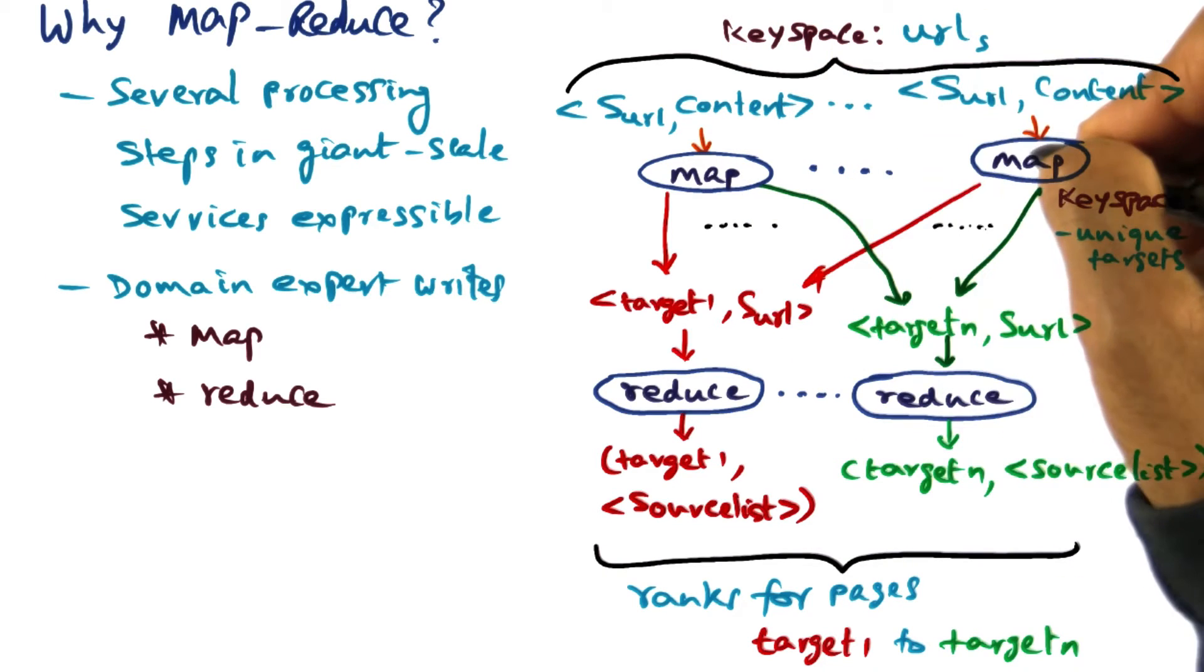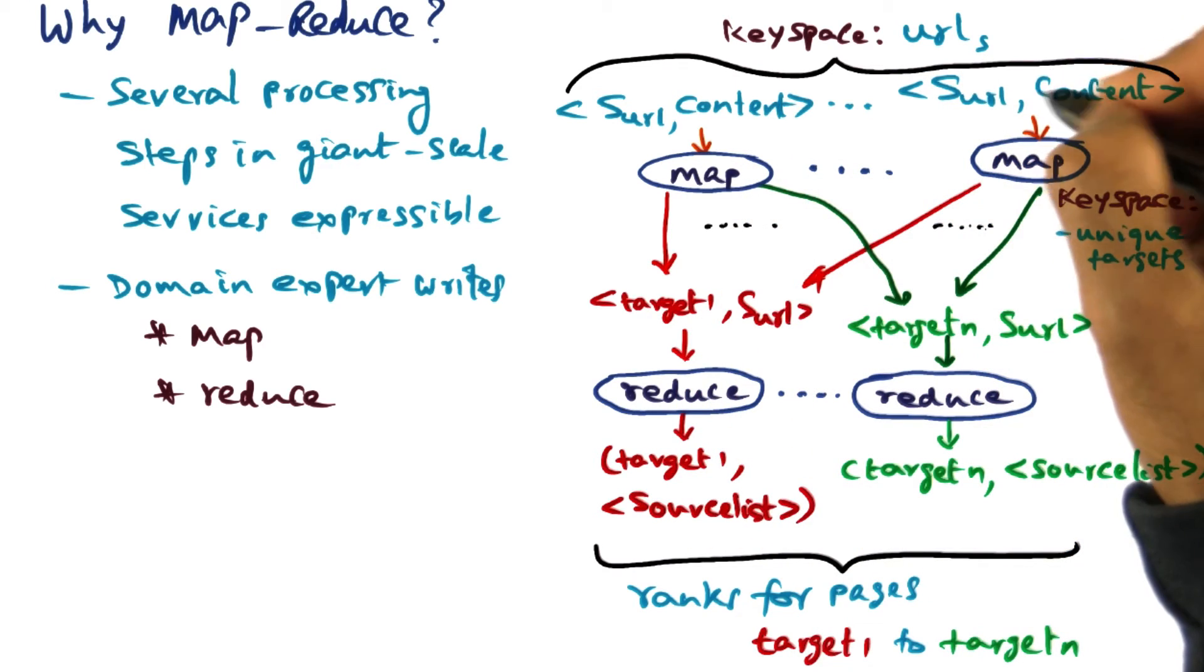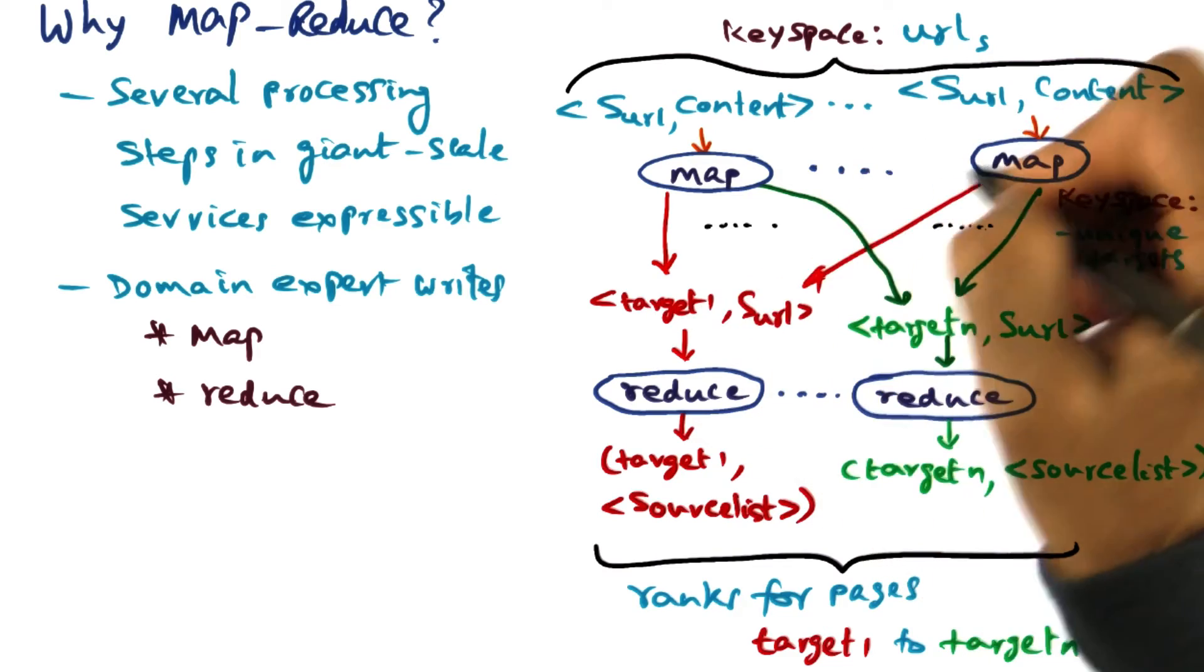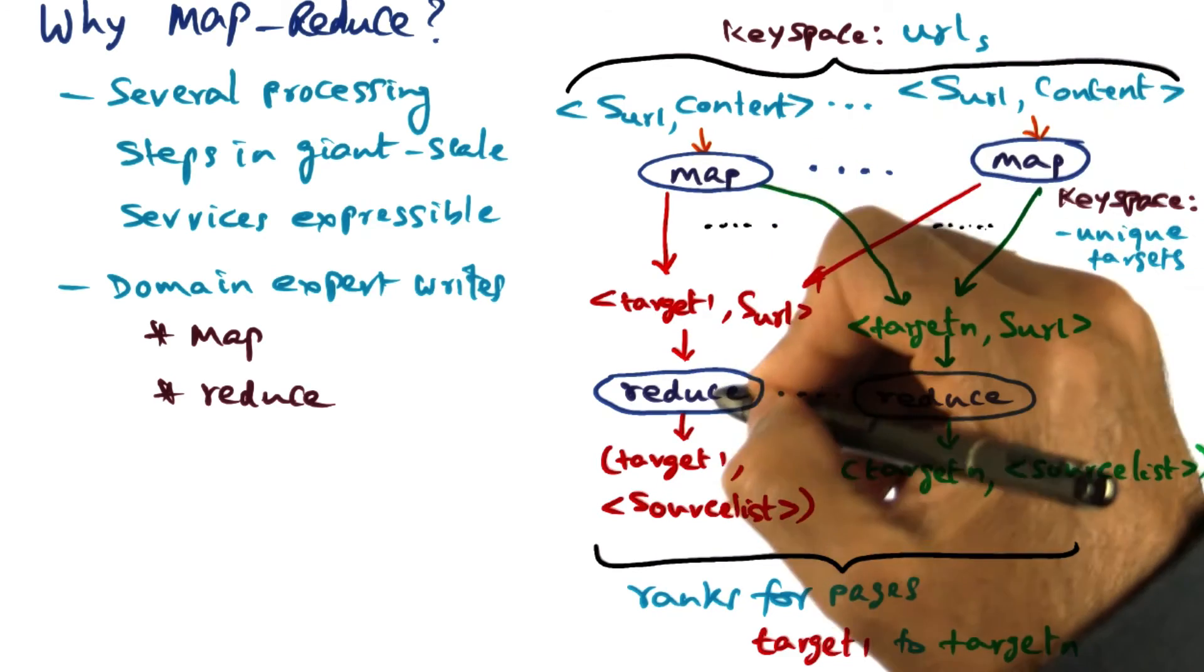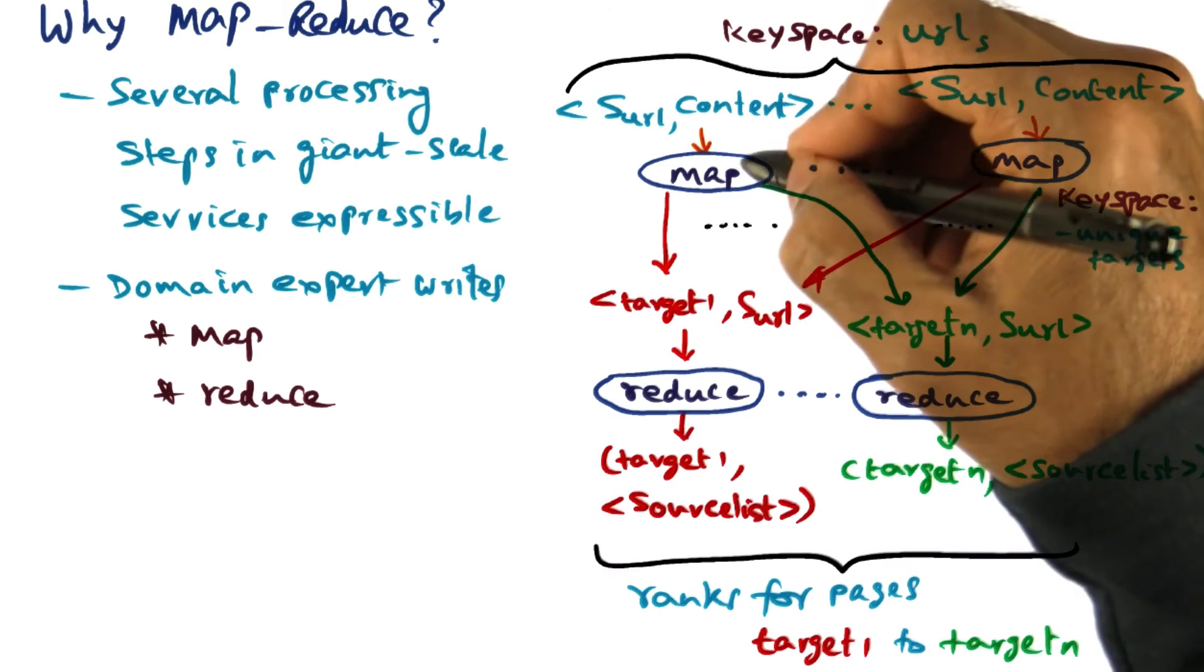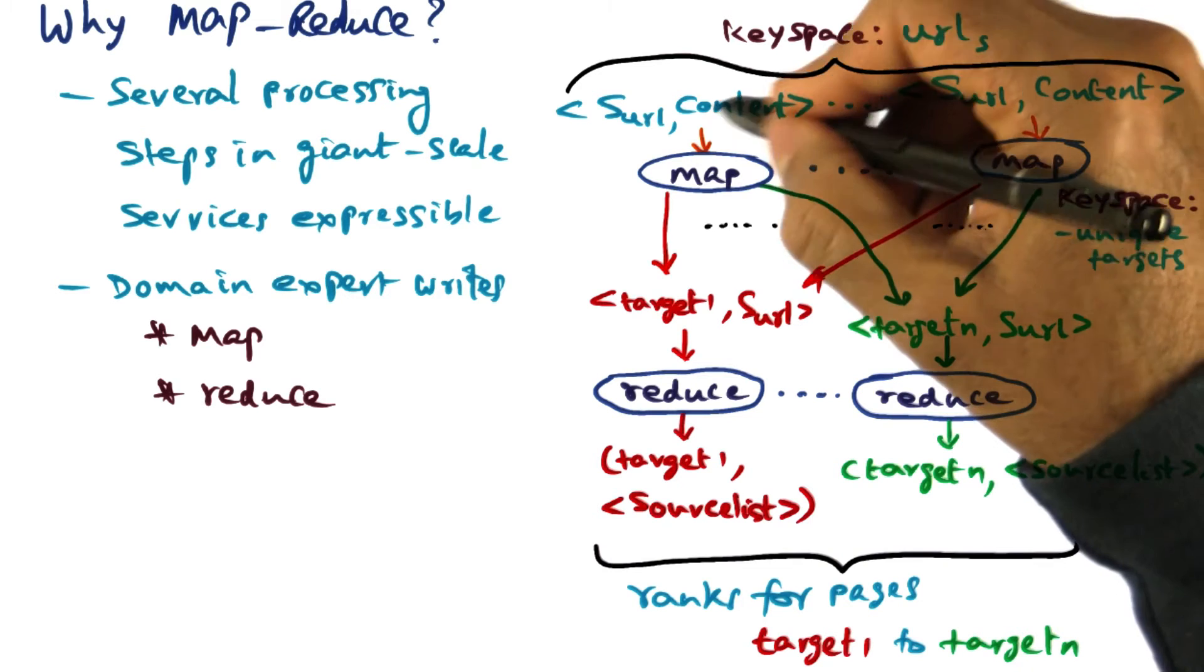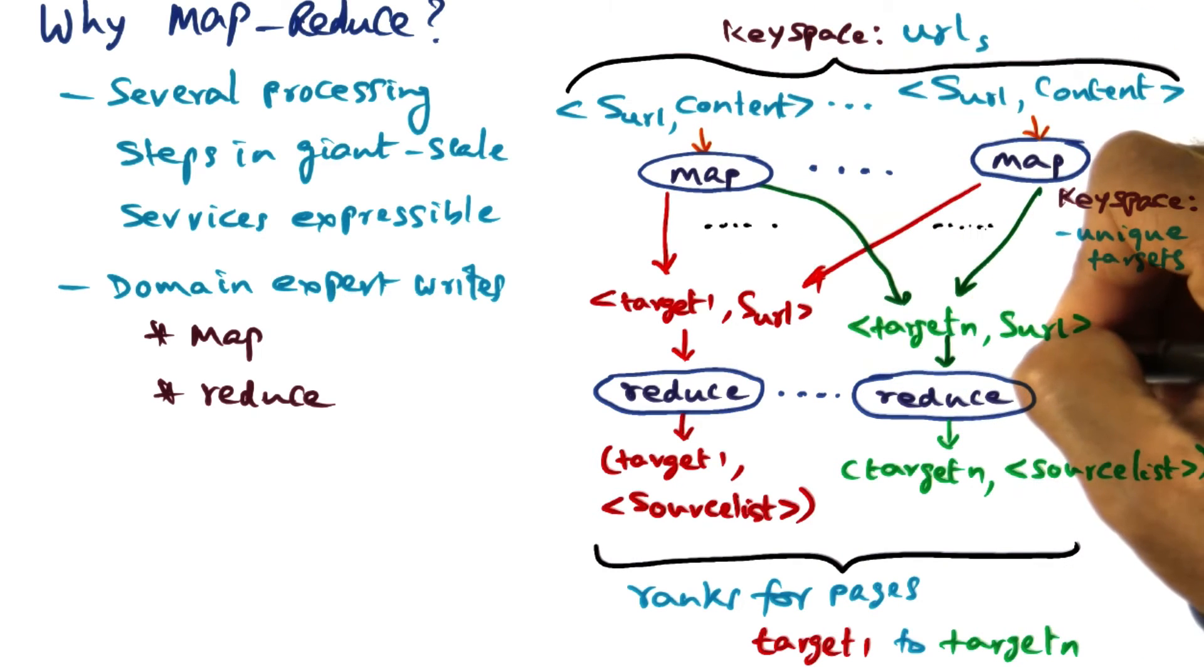So all the mappers, they're going to send their results to this reducer if they found in the input source URL the target target one. If they did, they're going to send their result to this reducer. Similarly, if they found target n, each of these mappers are going to send to this reducer that in the input URL they found this target n.